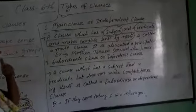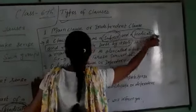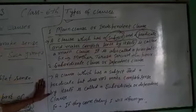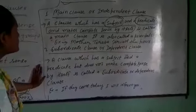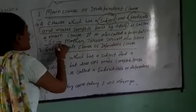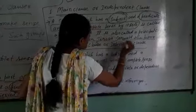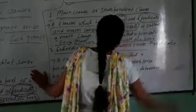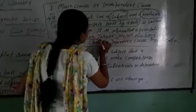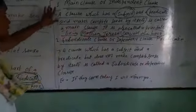The first type is the main clause or independent clause. A clause which has a subject and a predicate and makes complete sense by itself is called a main clause. It is also called a principal clause. Example: 'Mother Teresa served the poor.' Here, 'Mother Teresa' is the subject and 'served the poor' is the predicate, and it makes complete sense by itself. So it is called a main clause.